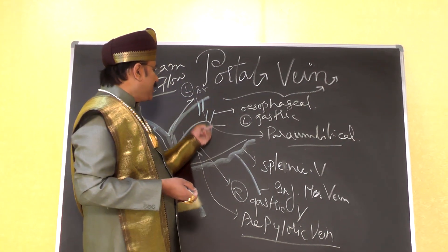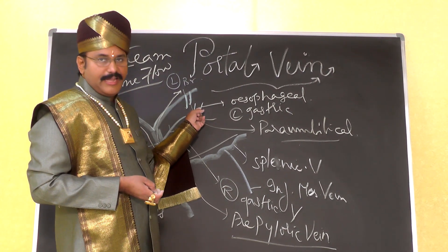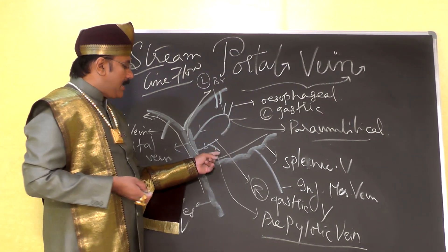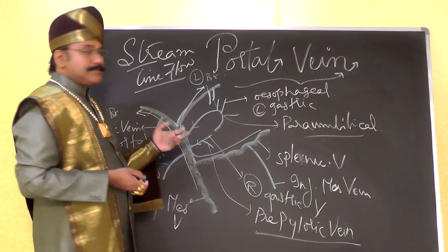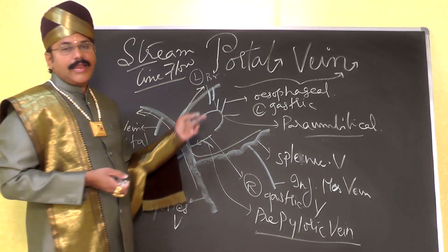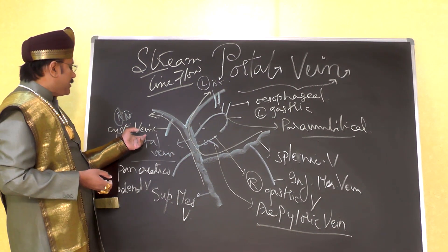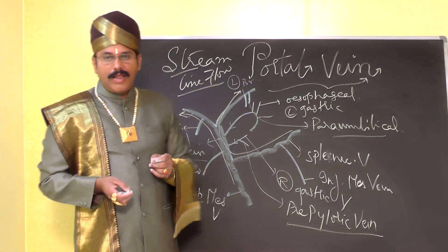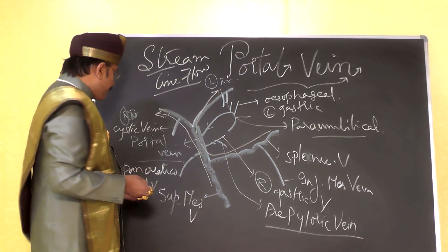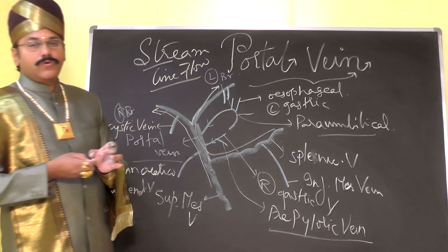The left gastric vein has esophageal veins as its tributaries. The right gastric vein has the pre-pyloric vein as its tributary. The left branch of the portal vein receives the para-umbilical veins from the umbilicus. The cystic vein from the gallbladder opens into the right branch of the portal vein. Opening into the main trunk of the portal vein is the superior pancreaticoduodenal vein.